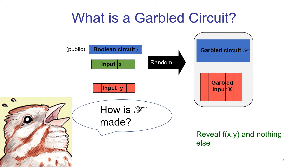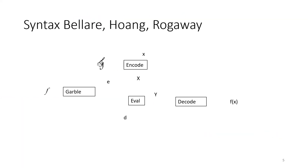Now we should talk about how this garbled circuit is made. The modern interpretation of garbled circuits comes from Bellare, Hoang, and Rogaway, who also formalized the syntax. A garbled circuit scheme consists of four algorithms: garble, encode, eval, and decode. The basic flow has f get garbled via the garble function to produce the garbled function, big F. Garble also produces an encoding string and a decoding string, little e and d, which are used as input for the encode and decode functions.